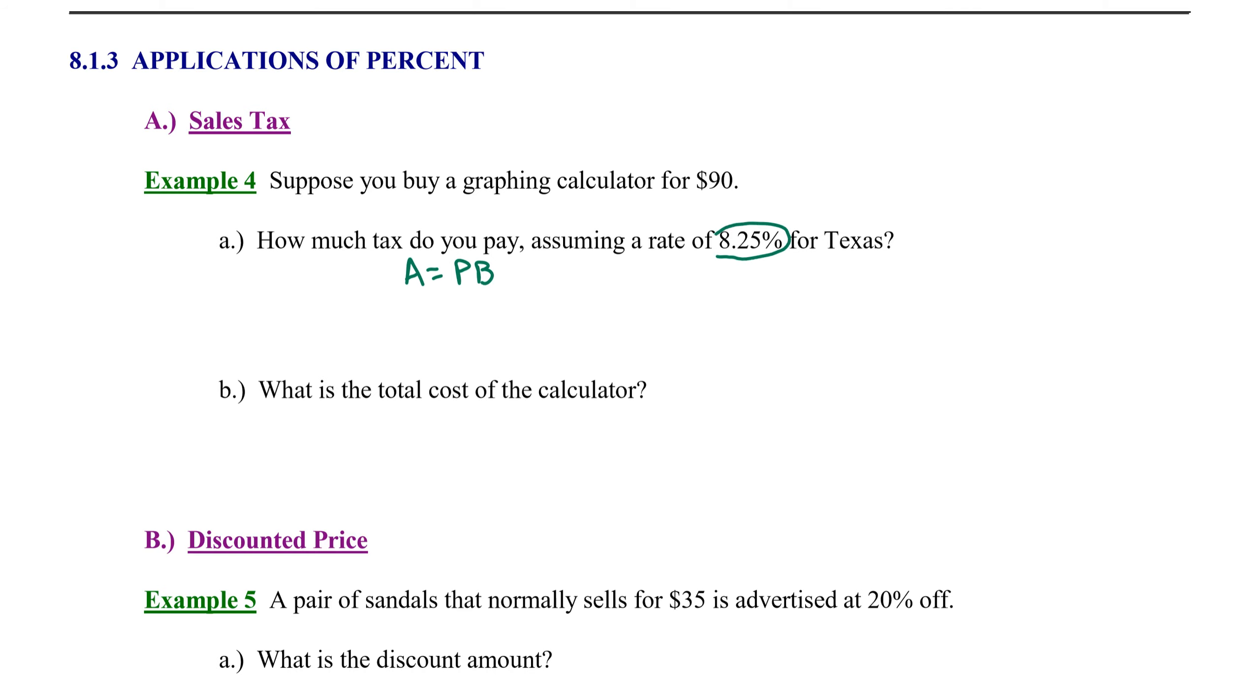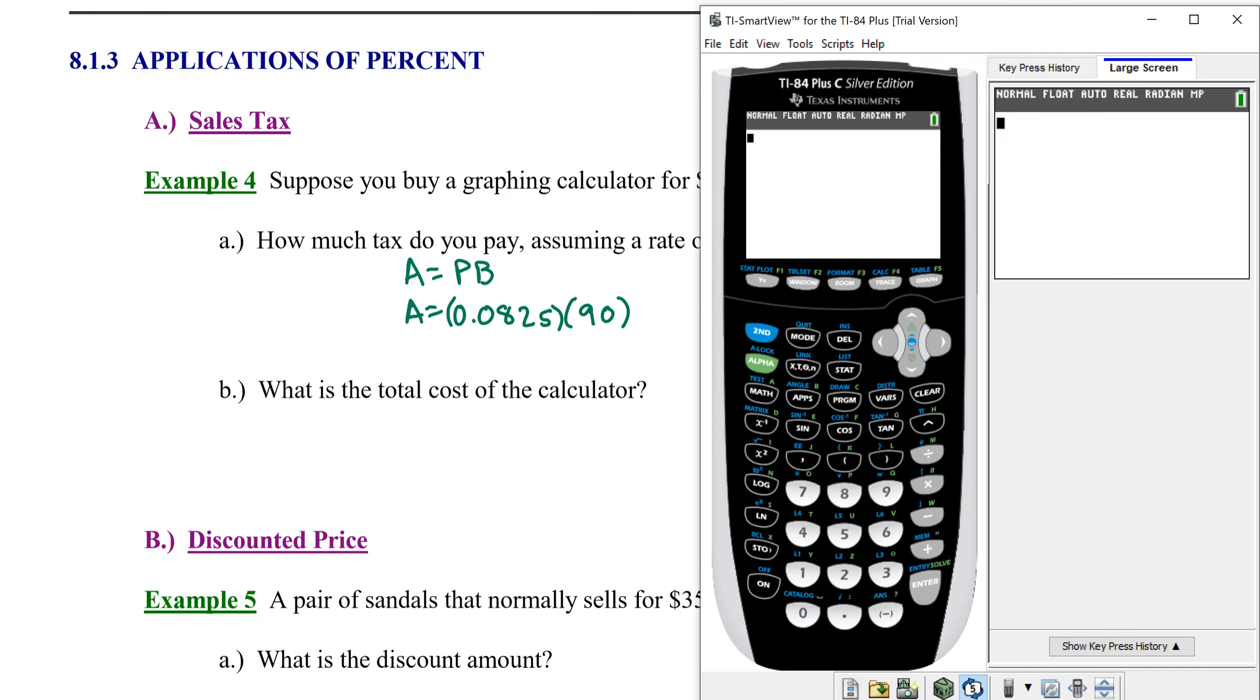The percent is 8.25%, but we're going to rewrite that as a decimal, 0.0825. Remember we just moved the decimal two places to the left. The total we paid for the calculator was $90, so we're finding a portion of that whole.